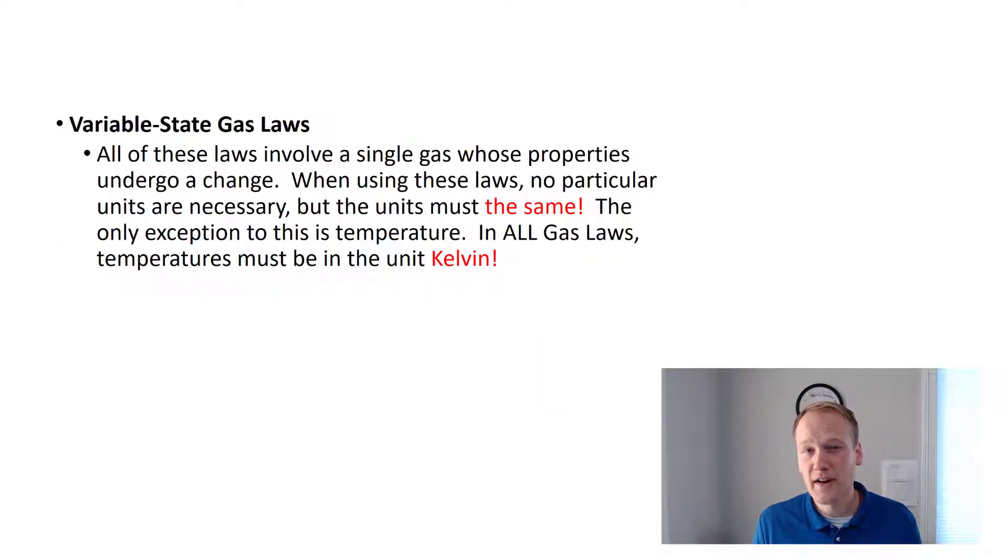We call these laws variable state gas laws. You can think about them as a before and after. Basically, you have a gas, and one of the variables undergoes a change, and we want to calculate how that affects the other variable. Most of the time, it doesn't matter what units you're in, as long as they're the same on both sides of the equation, except for temperature. Temperature has got to be in Kelvin, because the Kelvin scale doesn't have negative values and won't mess with the math as we do these calculations.